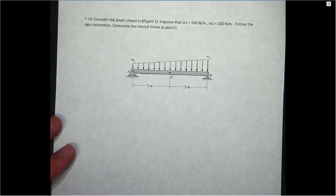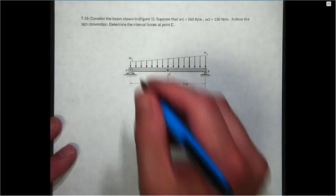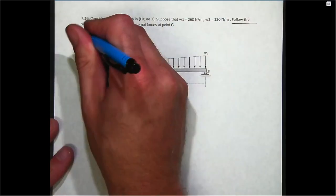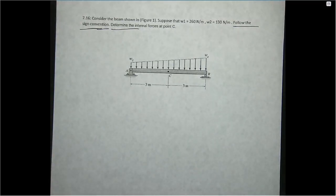We want to find the internal forces at point C. They say follow the sign convention here, and I'll show you for when you're entering answers into MyLab what they mean by sign convention. But if you happen to miss the sign convention, I will go through manually and look at your results. If you're just off by a sign, I'll give you credit because ultimately I would have to look at your work to see which direction you assumed for the various internal forces.